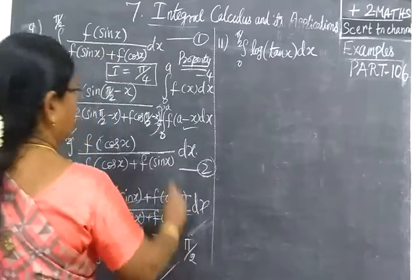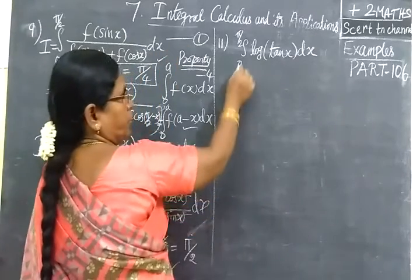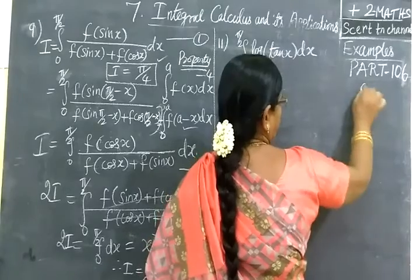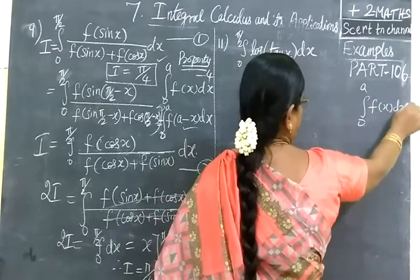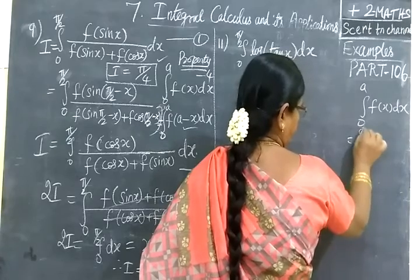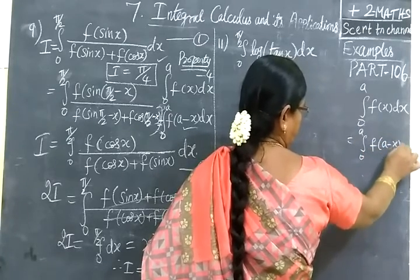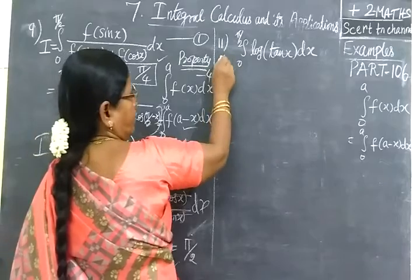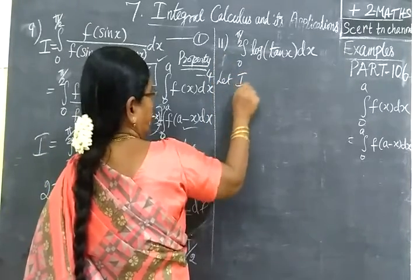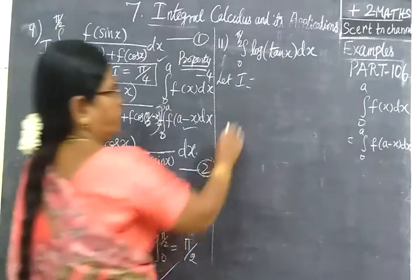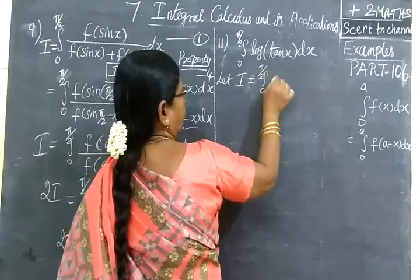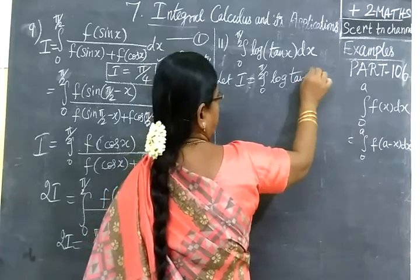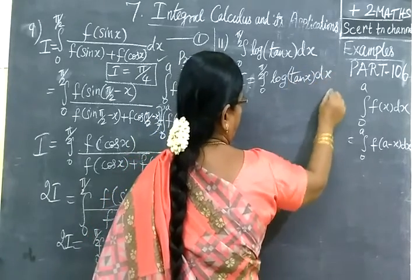So now here also, integral 0 to A form. Integral 0 to A, F of X dx. You write it as integral 0 to A, F of A minus X dx. This is property 4. So let I equal to integral 0 to 5 by 2, log tan X dx.